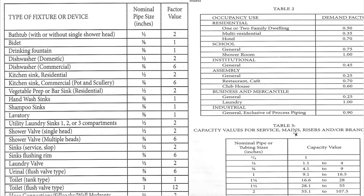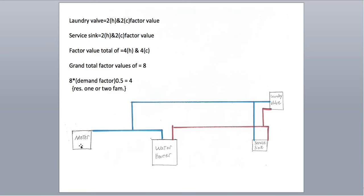Today we're going to do a real simple drawing just as a reminder or for beginners. Here we have a water meter, water heater, service sink, and laundry valve. Keep something in mind — you just have to orientate yourself. Everything on this hot line coming out of the water heater is going to have the factor values and the capacity of everything on the hot side. This leg into the water heater will be equal to this leg because everything on the hot side is on this cold leg. But at this T, you're going to have everything that's on the cold off this branch. And then off the meter, you're going to have both everything that's on the cold and everything that's on the hot.